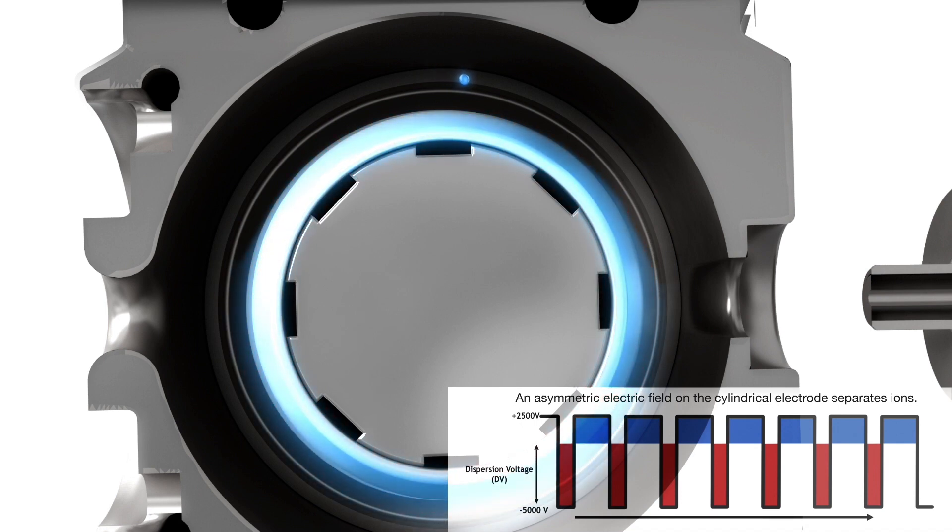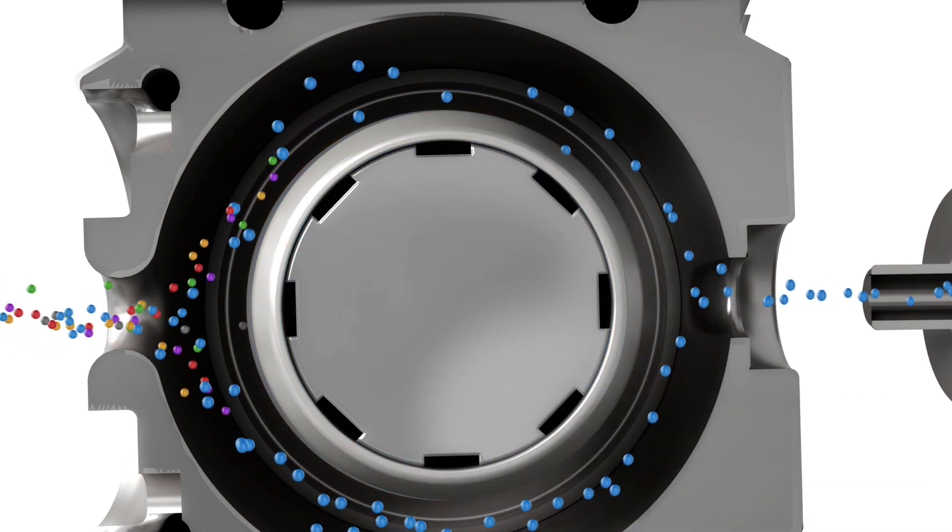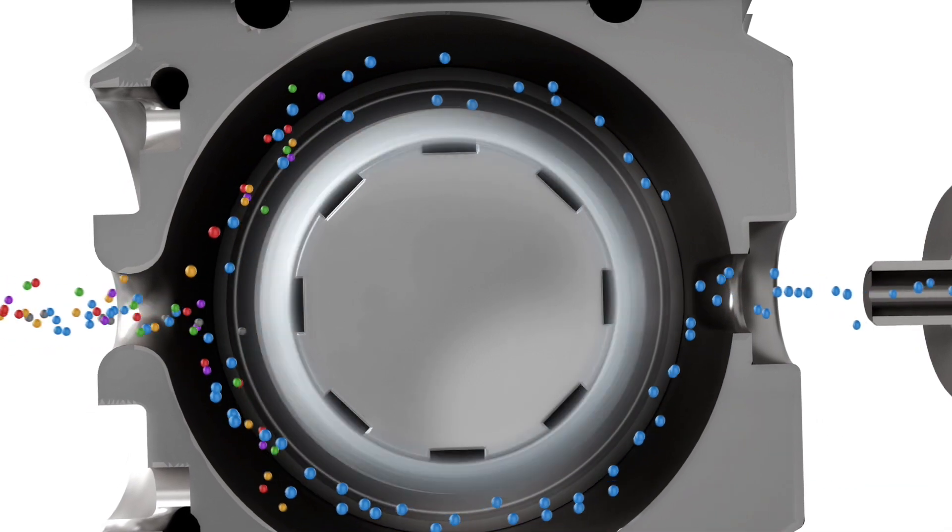Dispersion off the x-axis is due to ion mobility differences at the high and low field strengths and durations. During the ion's residence time, voltage switching repeats for tens of thousands of cycles. Each cycle causes greater dispersion.